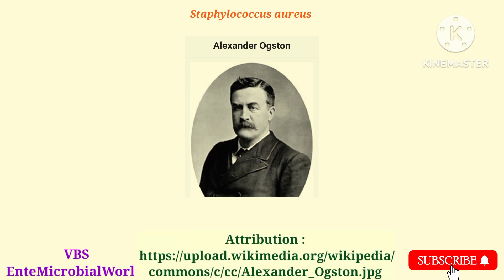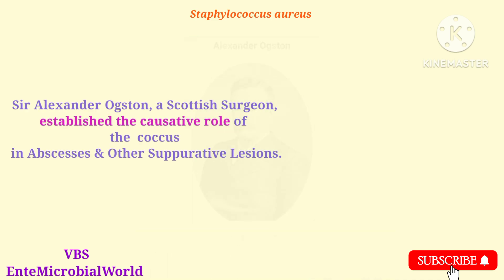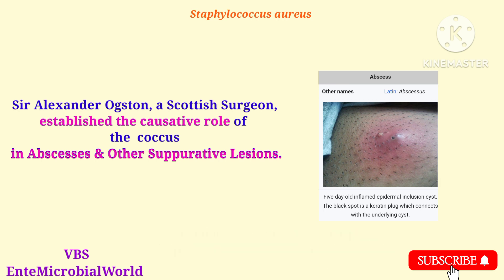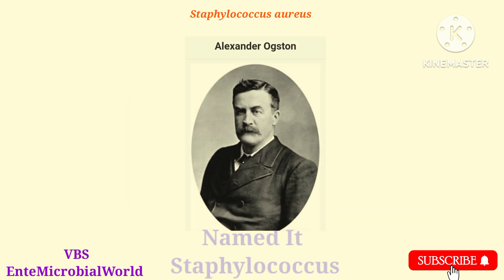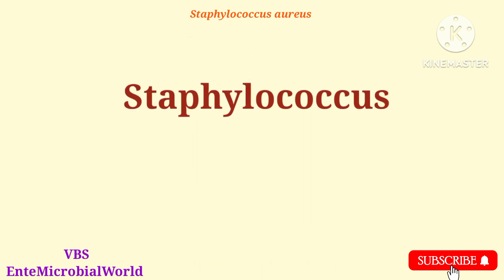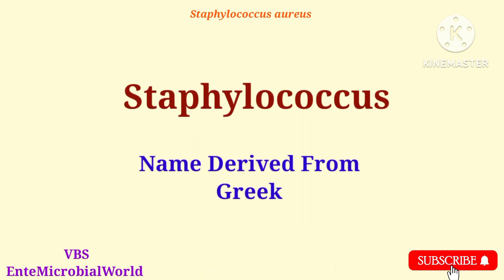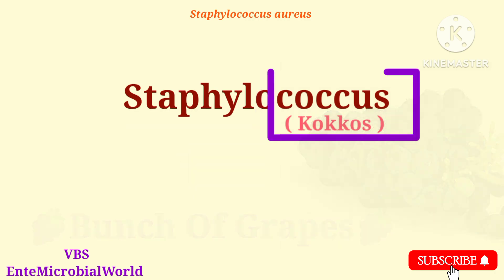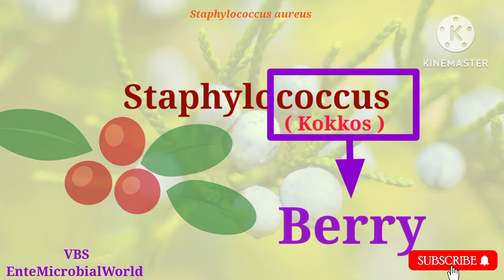Sir Alexander Ogston, a Scottish surgeon, established the causative role of the coccus in abscesses and other suppurations, and he named it Staphylococcus. The name Staphylococcus is derived from Greek: staphyl meaning a bunch of grapes, and coccus meaning a berry.